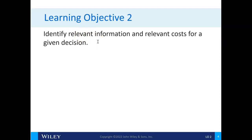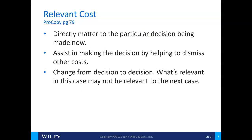If it makes a difference or would influence a decision maker, then it's relevant. Relevant costs matter directly to the particular decision being made. They help by eliminating things you don't have to take into consideration — the simpler a decision is, the better. It also changes from decision to decision; what's relevant in one case may not be relevant in the next.